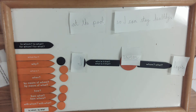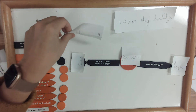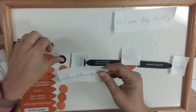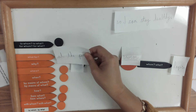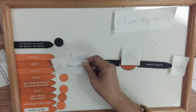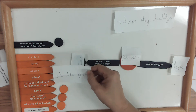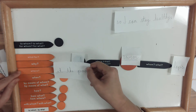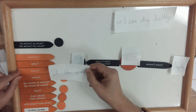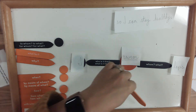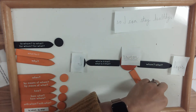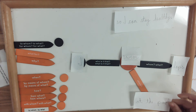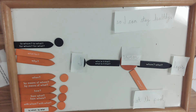Well, 'at the pool' doesn't answer the question 'to whom' or 'to what.' So what I do is I take 'at the pool' and look at which of these questions it answers: what for? No. Why? No. Where? Where do I swim? At the pool — this is the right one. Orange arrows start down here: I swim laps at the pool.